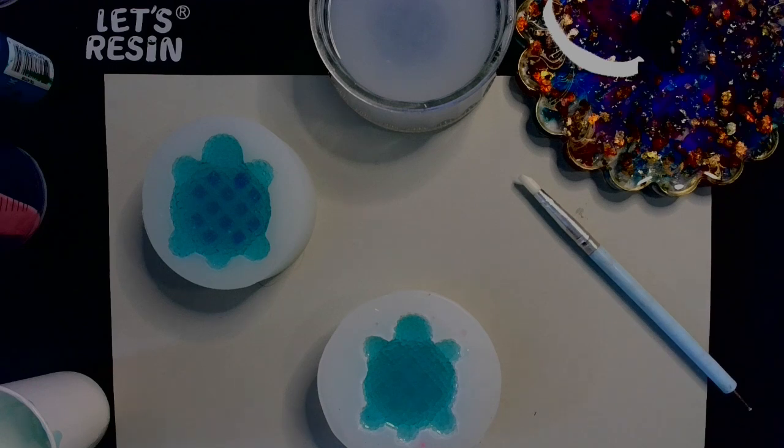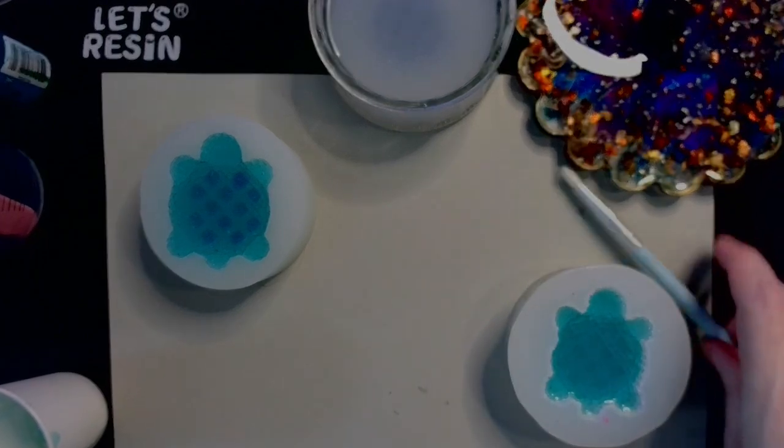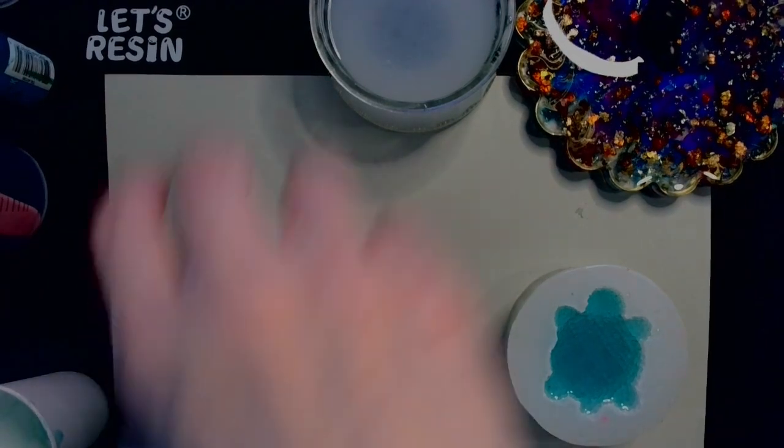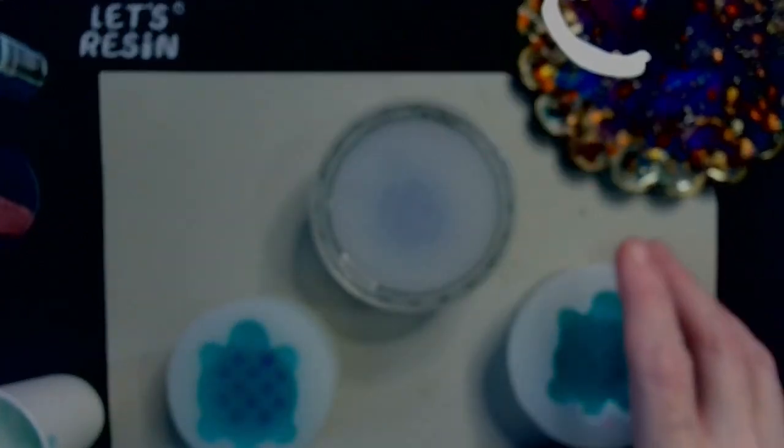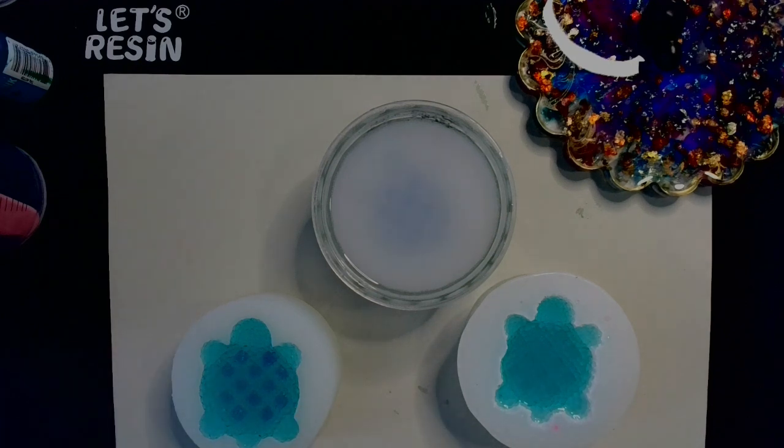All right, so now we have our Hurdle Turtles. So here they are. So we'll name them Curdle, Myrtle, and Squirtle. Yeah? Like it? I do. So I'm going to let these guys do their thing, cure up, and I will see you when it's time for D-Mold. See you soon.